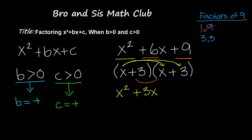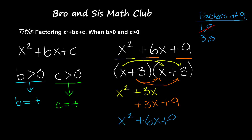Now multiplying 3 times 3 gives us positive 9. And when we combine these terms we get x squared plus 6x plus 9.